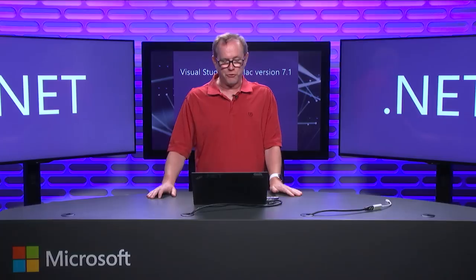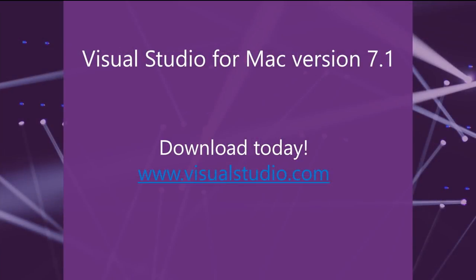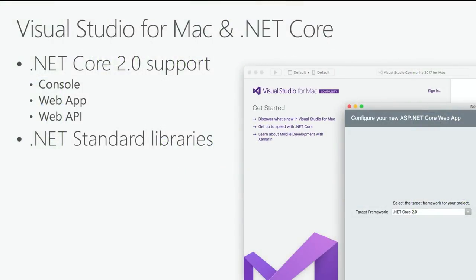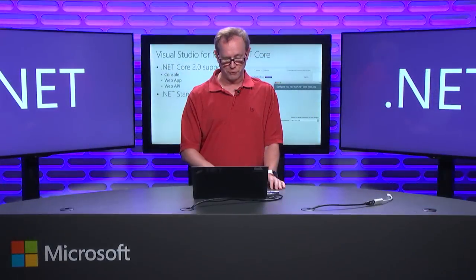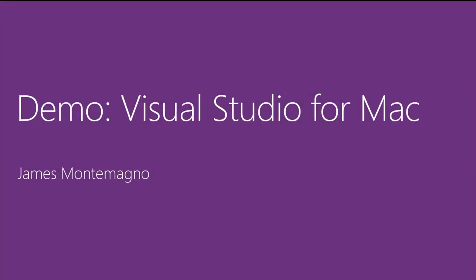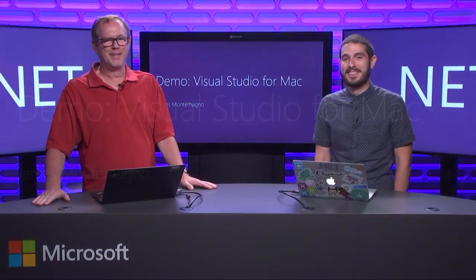Let's move on from functions. The next thing I want to talk about is that today we also shipped Visual Studio for Mac version 7.1. You can also download this today at visualstudio.com. Visual Studio for Mac has full support for .NET Core 2.0. You can build console apps, API apps, web apps — all with Visual Studio for Mac — and it's got full support for .NET Standard 2.0 as well. So all the stuff I was showing in Visual Studio for Windows, you can do in Visual Studio for Mac. Next, I'm going to have James come out and show Visual Studio for Mac.